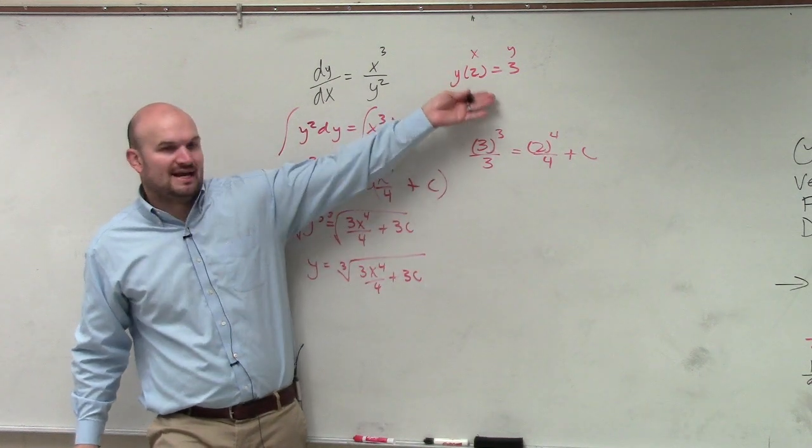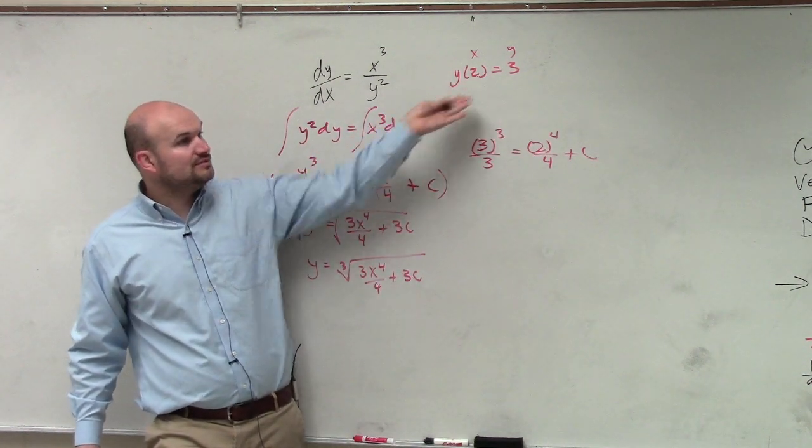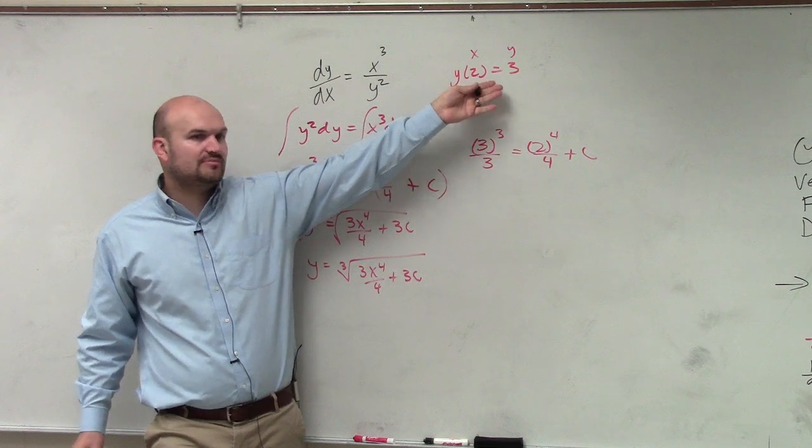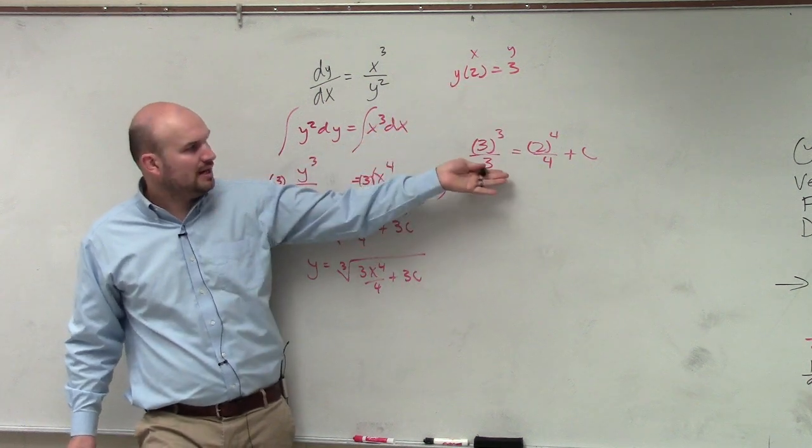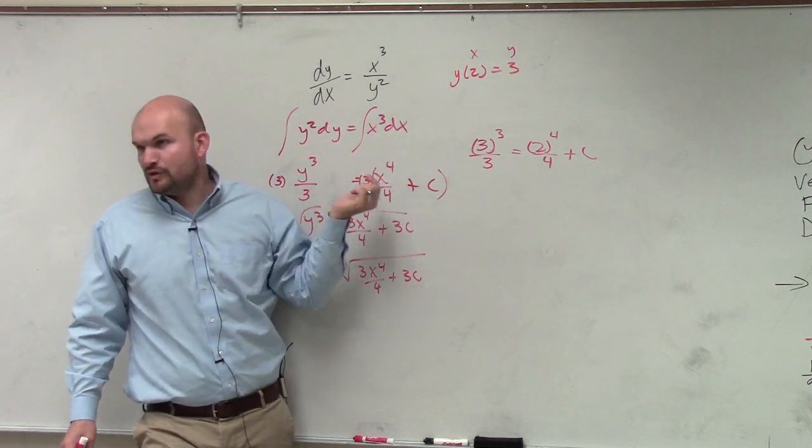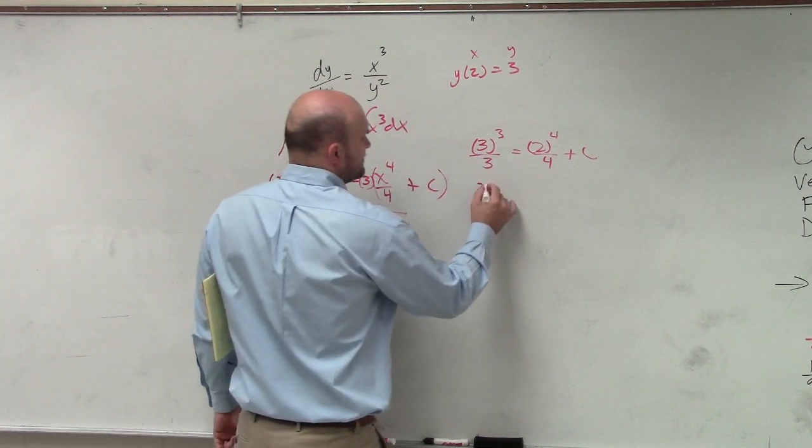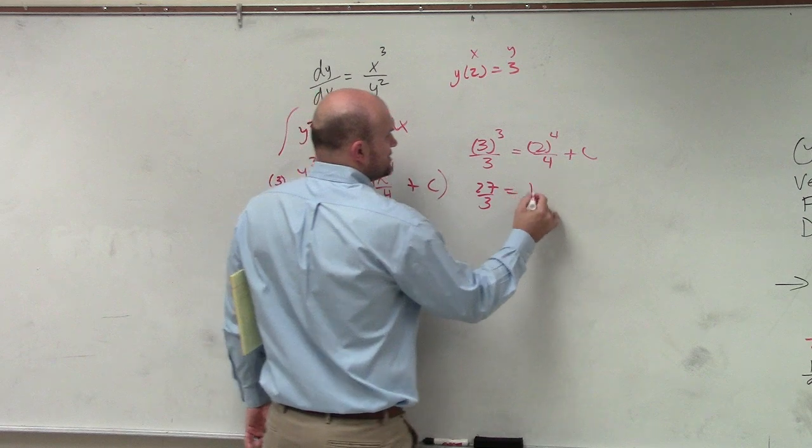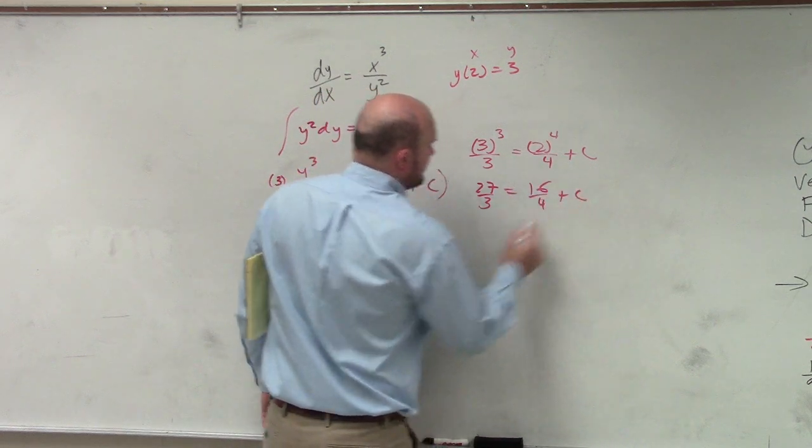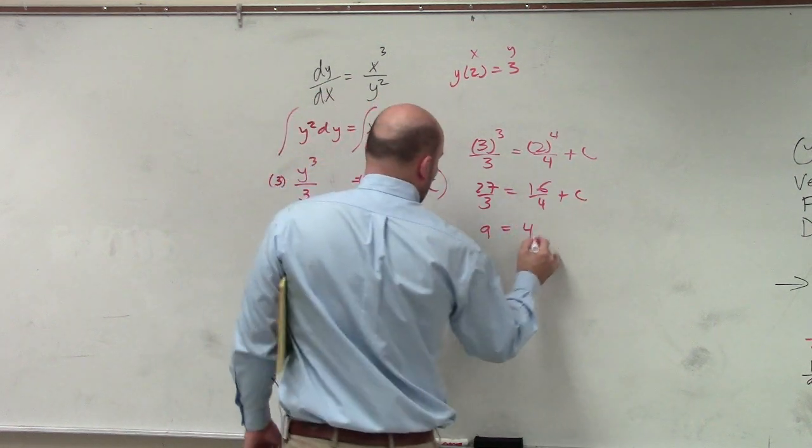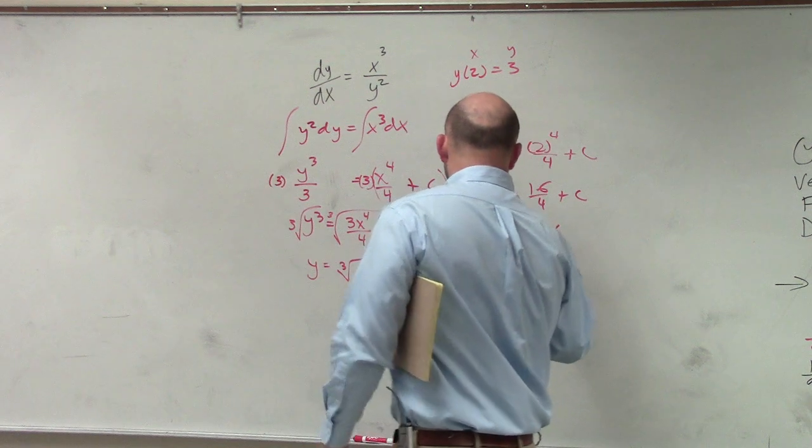So I know I kind of added this late to you, but if you're going to do this, try to see, make sure you're finding your value c once you've integrated before you've solved. It's going to probably be more simple for you. So therefore, I have 27 over 3 equals 16 over 4 plus c. That's 9 equals 4 plus c. c is equal to 5.